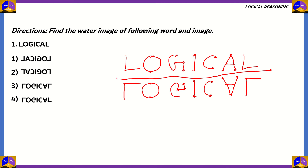Now we look at the options and find a figure similar to what we drew. Option 1 and option 2 are wrong because L is not correctly reflected. In option 3, we can see that L, O, G, I, C, A, and the final L are all correctly reflected. In option 4, the last letter L does not show the correct water image. So the correct option is option number 3 — this is the water image of the word LOGICAL.